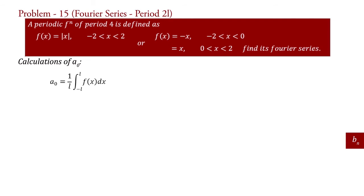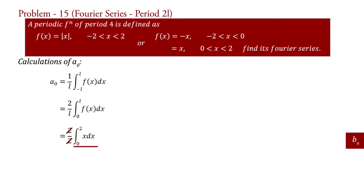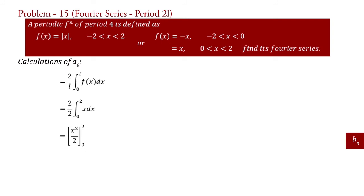For a_0: the formula is a_0 = (1/L) ∫_{−L}^{L} f(x) dx. Since f(x) is even, a_0 = (2/L) ∫_0^L f(x) dx. Substituting f(x) = x and L = 2, a_0 = (2/2) ∫_0^2 x dx. The 2s cancel, and integrating x gives x²/2, so a_0 = [x²/2]_0^2 = (4/2) = 2. This is the value of coefficient a_0.